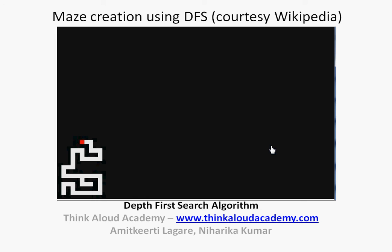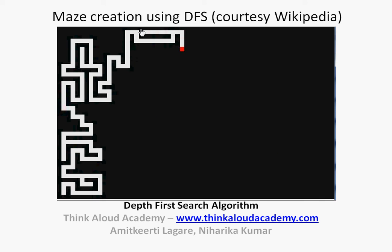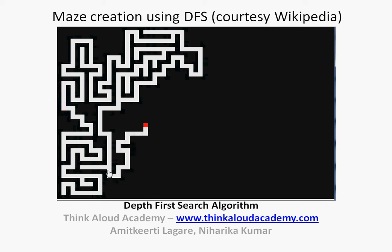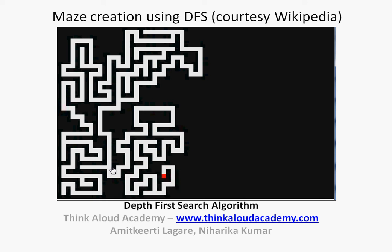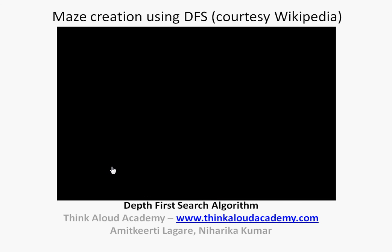This video is slightly fast so you may not be able to see the backtracking clearly. You will see the dot goes around, gets stuck, returns back, hits a dead end, and comes back again. It backtracks and goes in a new path, creating new passages in the maze. This process continues until the maze is fully created.